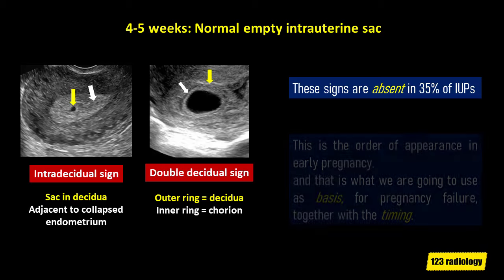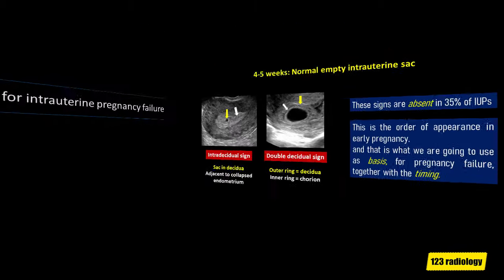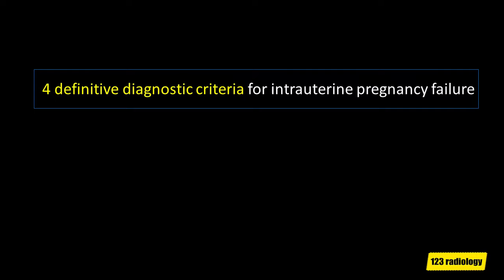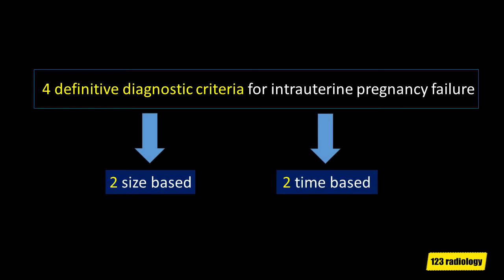This is the order of appearance in early pregnancy, and that is what we are going to use as the basis for pregnancy failure, together with the timing. There are four definitive diagnostic criteria for intrauterine pregnancy failure: two are size-based, and two are time-based.